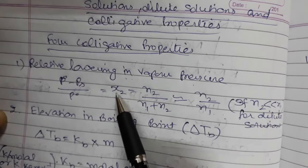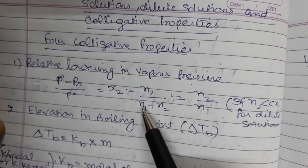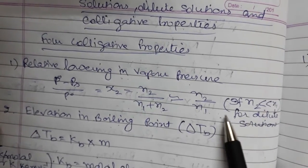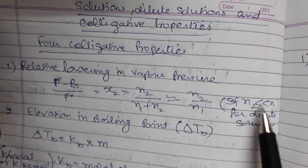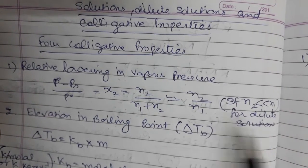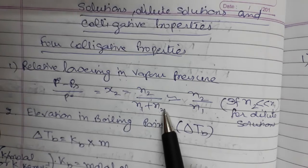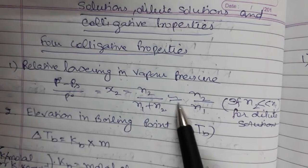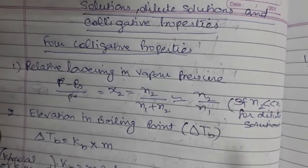The mole fraction x2 is equal to n2 upon (n1 + n2). For very dilute solutions where n2 is very small compared to n1, we ignore n2 in the denominator, so it becomes roughly equal to n2 upon n1.